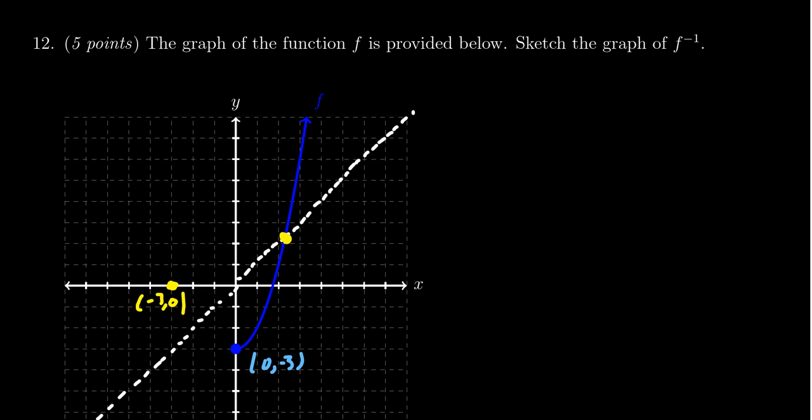And so when you look at this graph f, it kind of looks like half of a parabola. So the inverse will look kind of like a square root function. And using these two points, I'm going to do my best to draw this thing.